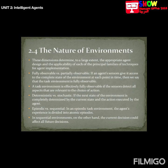Fully observable versus partially observable: if an agent's sensors give it access to the complete state of the environment at each point in time, then we say that the task environment is fully observable. A task environment is effectively fully observable if the sensor detects all aspects that are relevant to the choice of action.